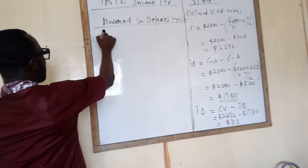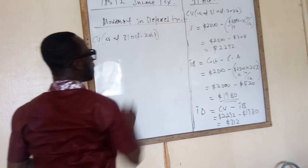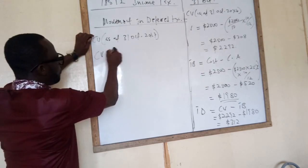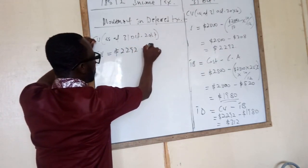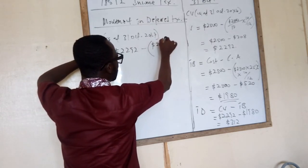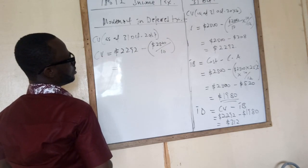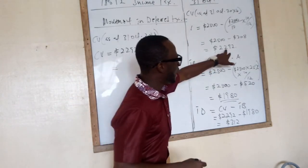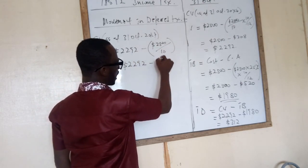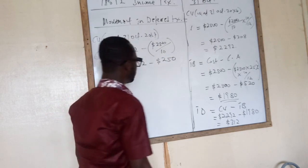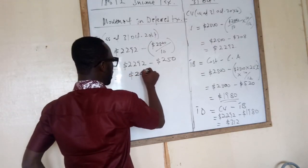In the second year, we need to calculate the carrying value of the asset as at 31st October 2017. Our carrying value will be the cost. We could take this figure — 2292 — minus depreciation. Remember, depreciation is straight line: 2500 over 10, which is 250. So this would be 2292 minus 250. The carrying value is 2042.